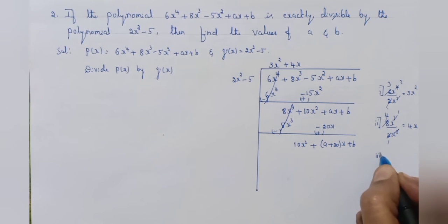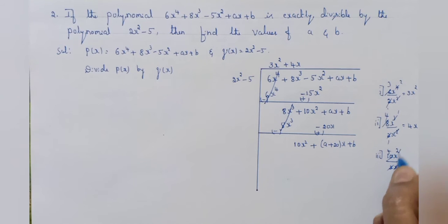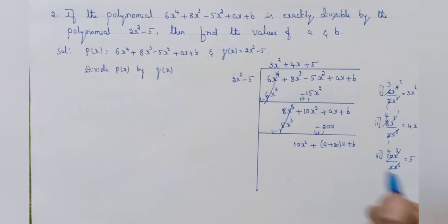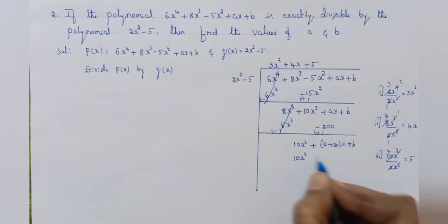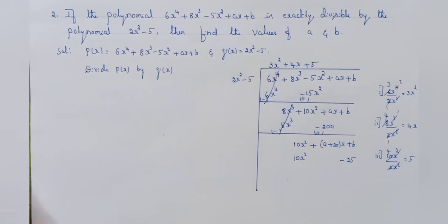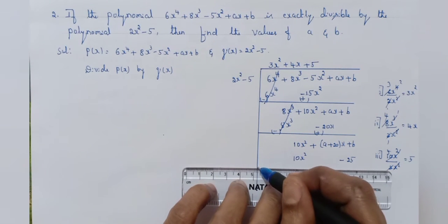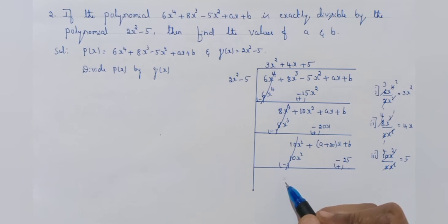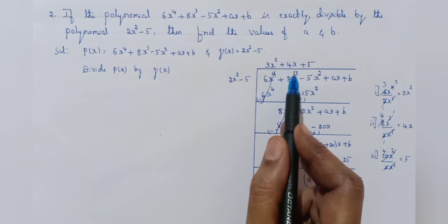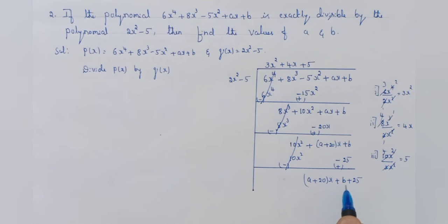The first term of the dividend is 10x square. Divide 10x square by 2x square — x square gets cancelled, you get 5. Write 5 in the quotient place. Now multiply 2x square minus 5 by 5: 10x square minus 25. Change the signs: plus 10x square minus 10x square get cancelled. The remainder is a plus 20 into x plus b plus 25. So the quotient is 3x square plus 4x plus 5.